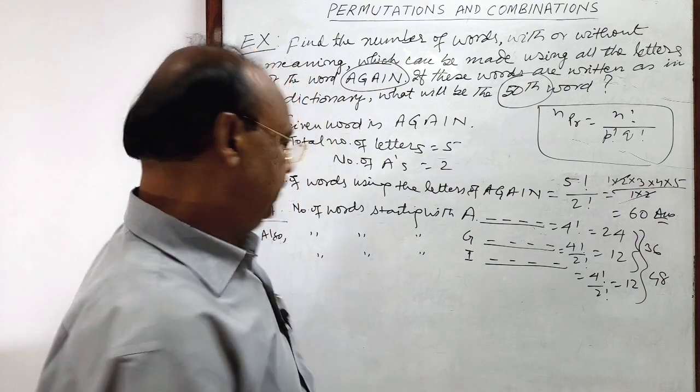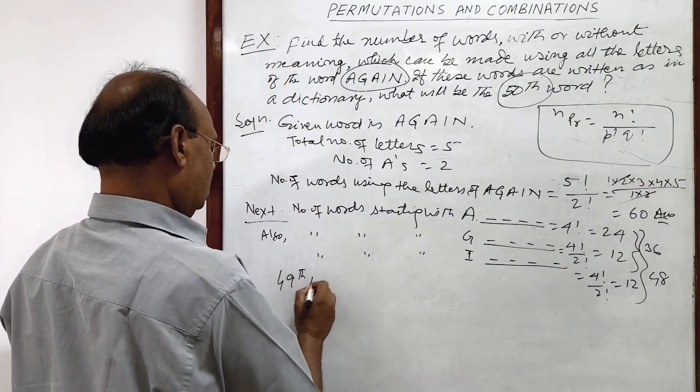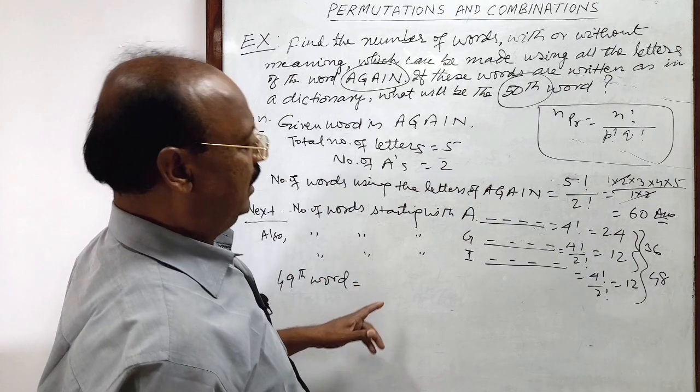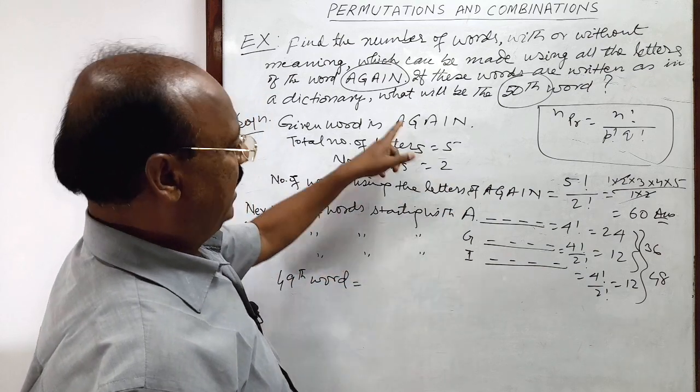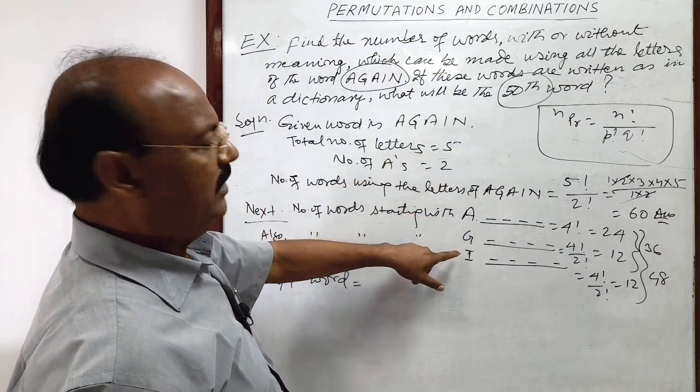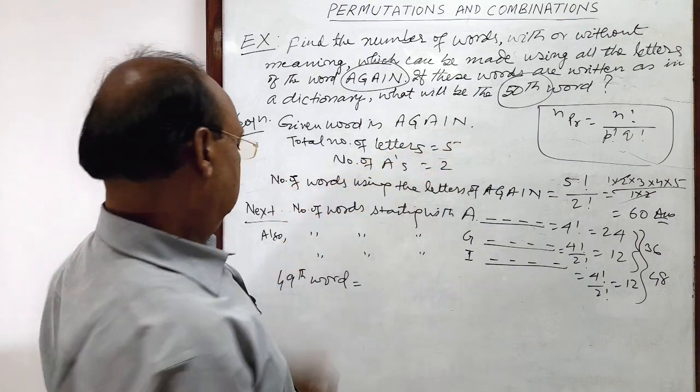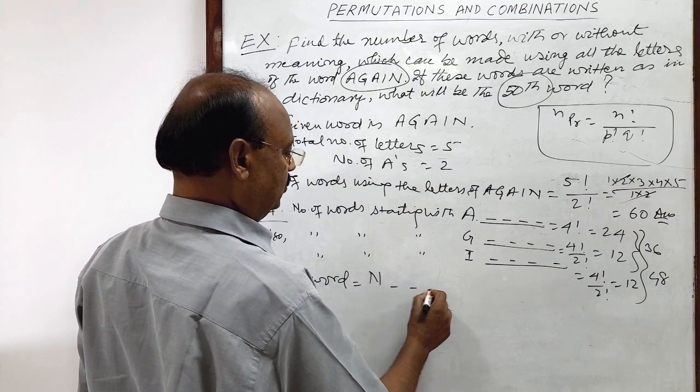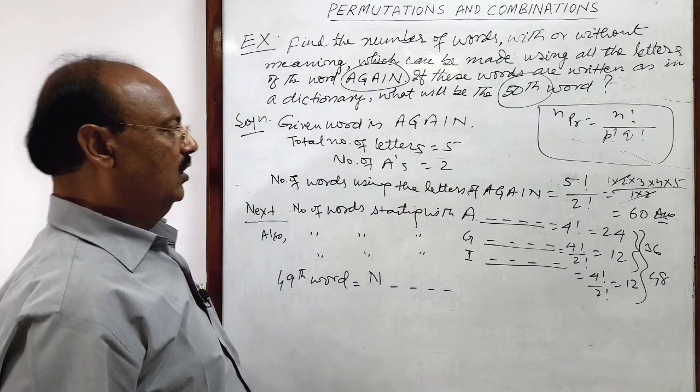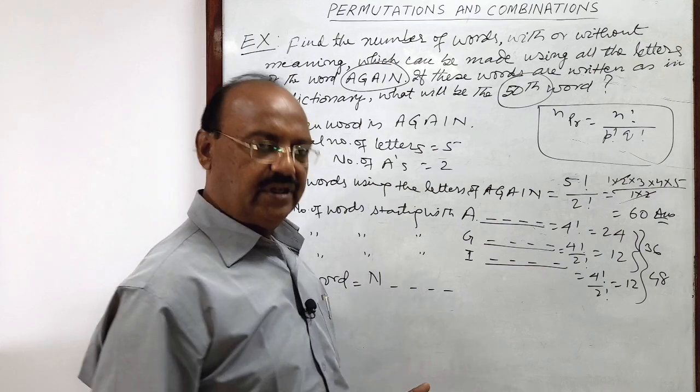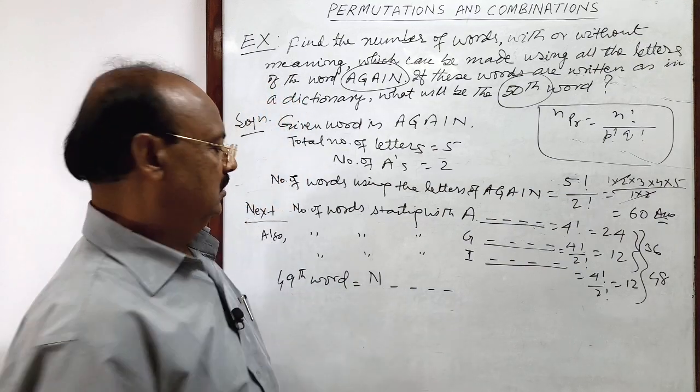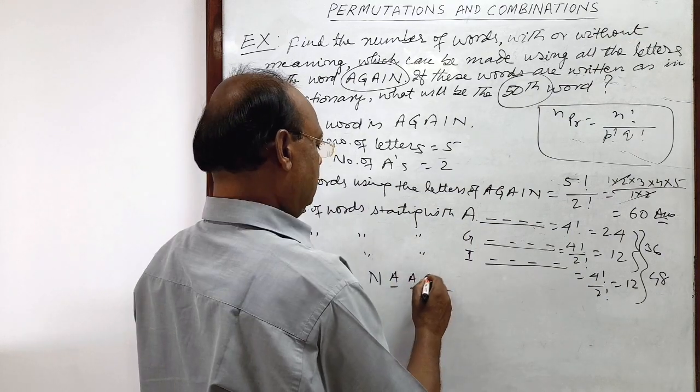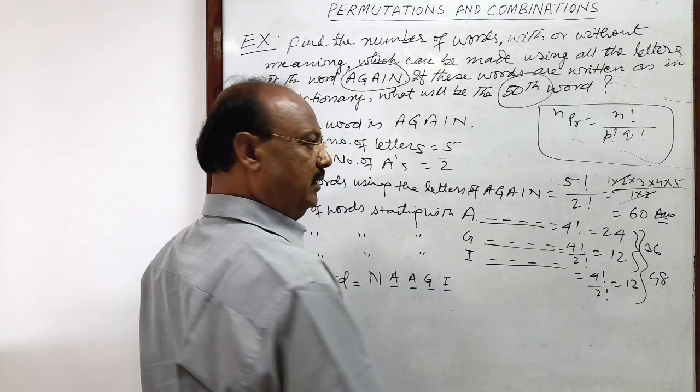What will be 49th word? 49th word is, it will again start from, we have used A, G, I. So last letter left is N. It will start with N and here 1, 2, 3, 4 letters will be here. As you see the dictionary, check the dictionary, then A will be here, again A will be here, then G and I here.